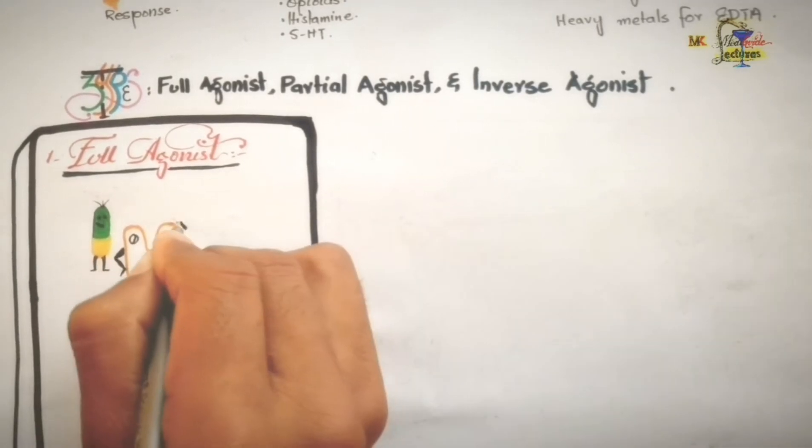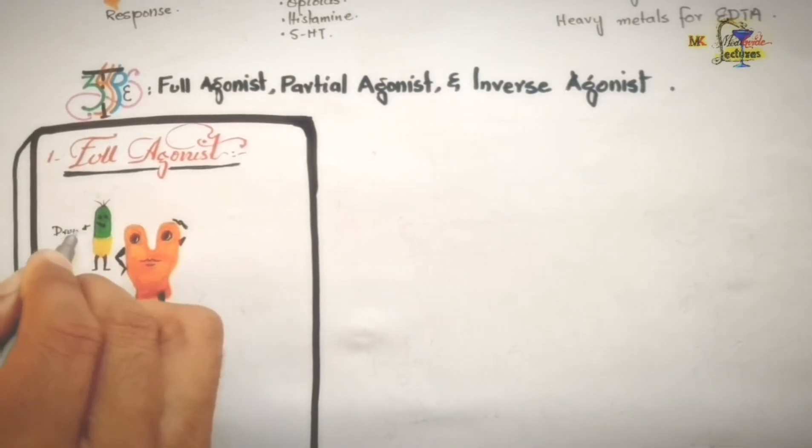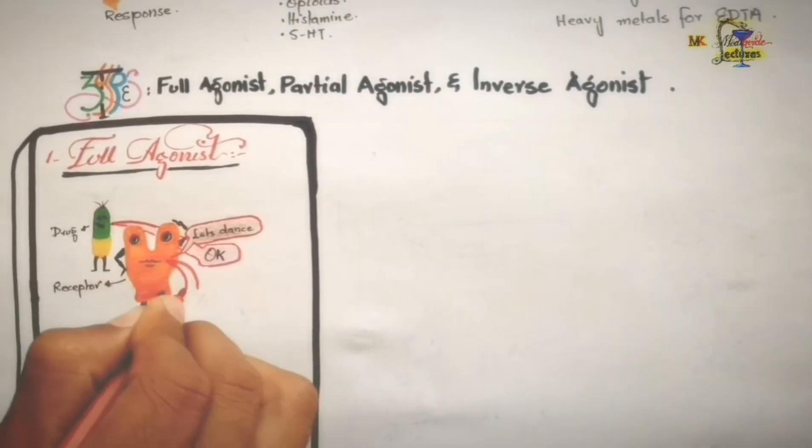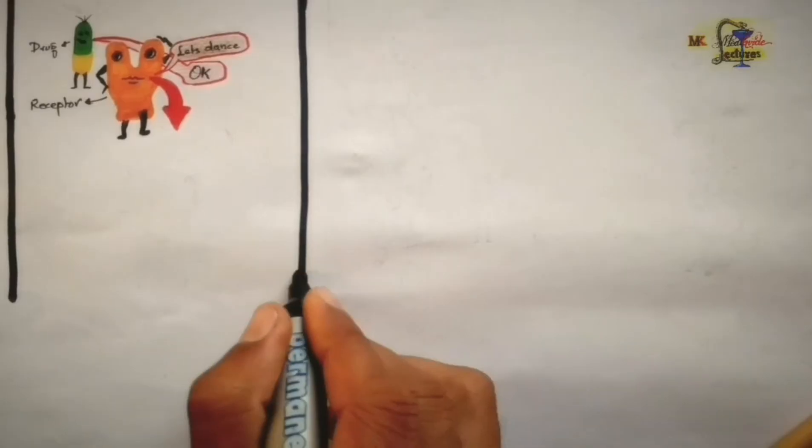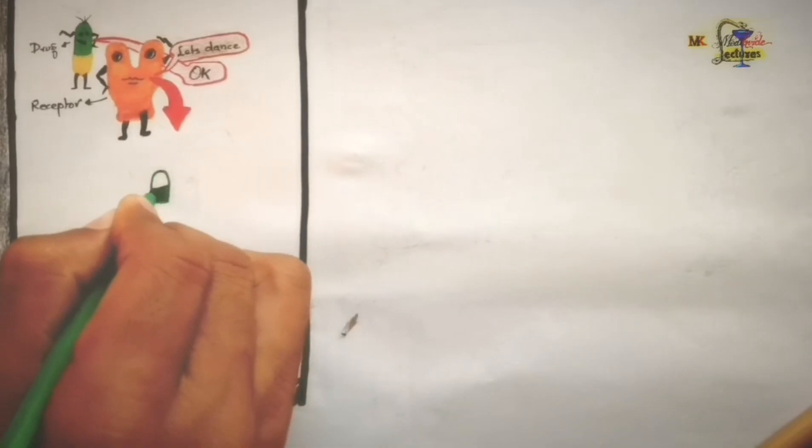When the drug binds to a receptor and produces a maximal response, this drug is said to be a full agonist. In general, a full agonist has strong affinity for its receptor and good efficacy.